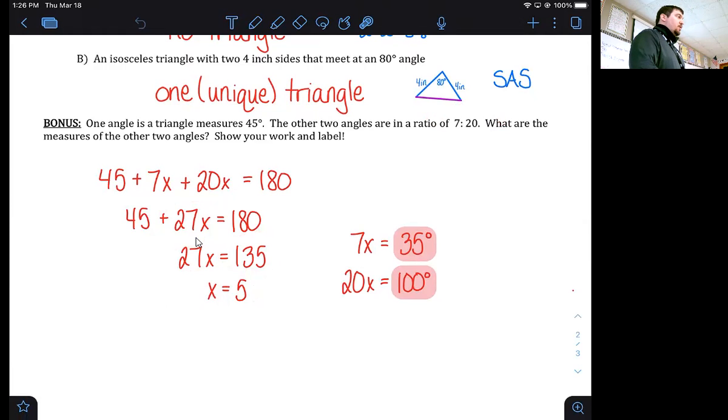And so if x is 5, that makes this angle 35 and it makes this angle 100 degrees. So that's how you go. You subtracted 45 from 180 to get 135. My guess is you forgot about the 45 degree angle that was already given to you.